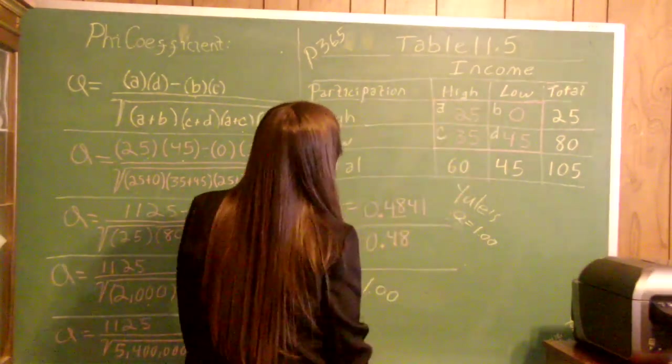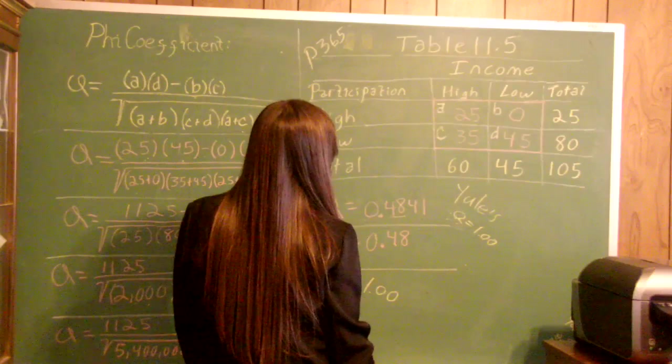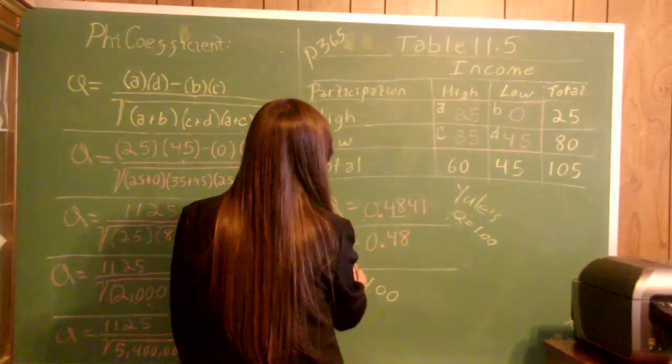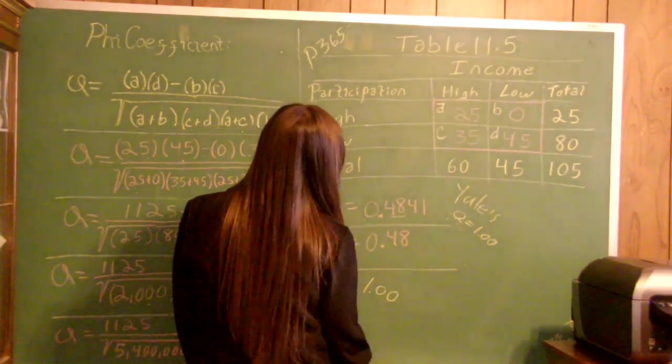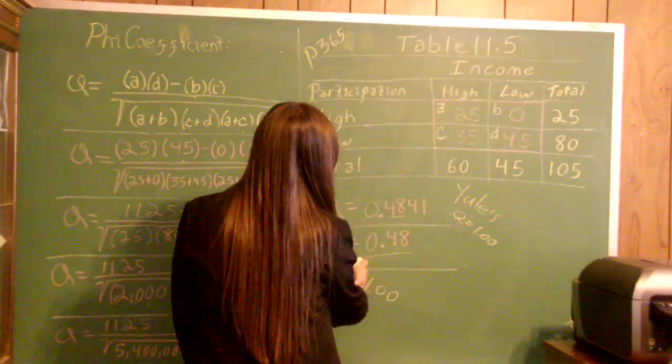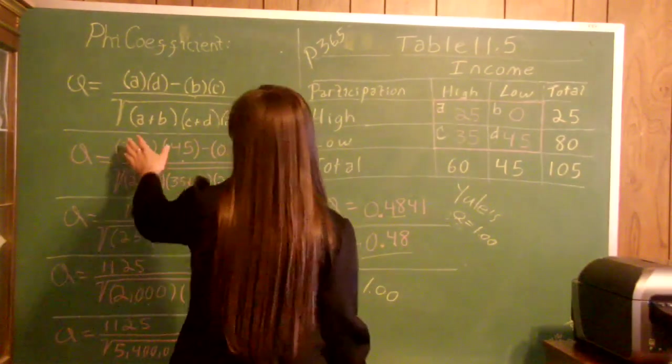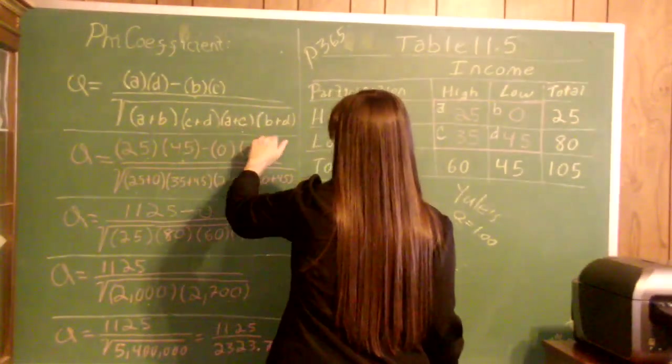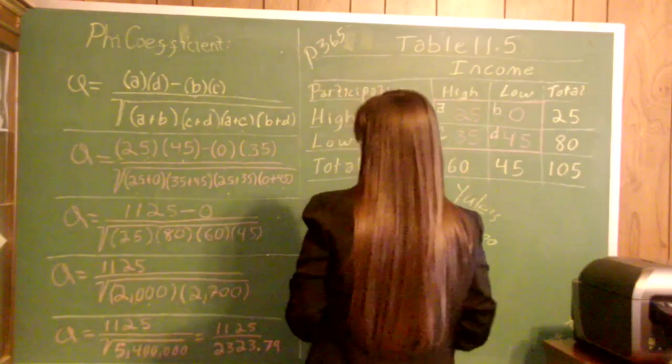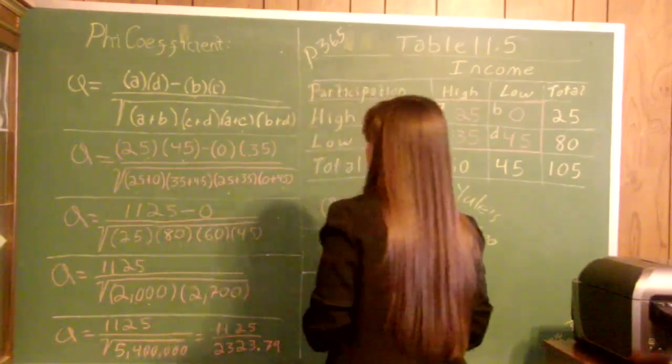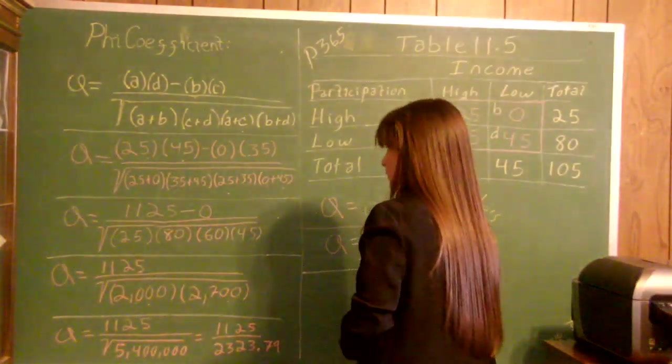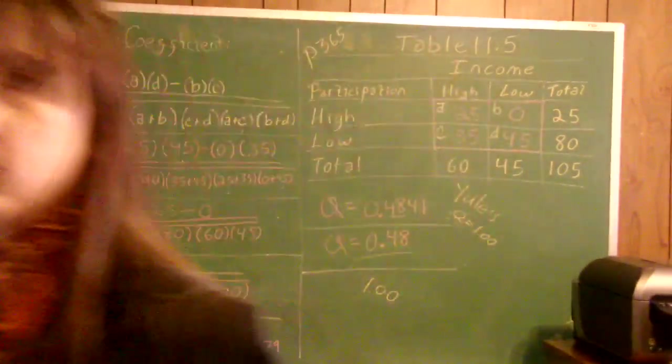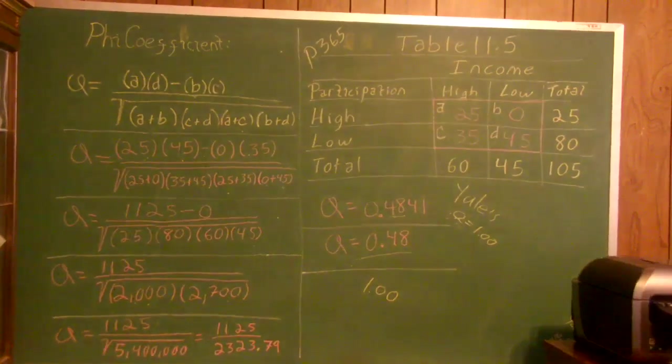When you did Yuly's Q, it didn't look like there was really a correlation, and the V coefficient confirms that. How? Because V takes the different combinations—A plus B, C plus D, A plus C, and B plus D—and figures out from these different marginal totals if there is truly a relationship or not.